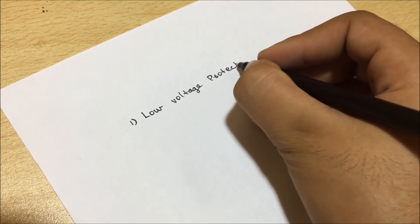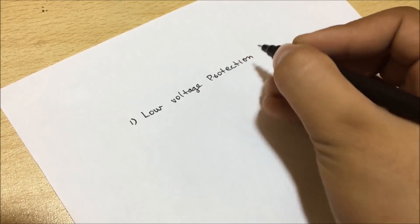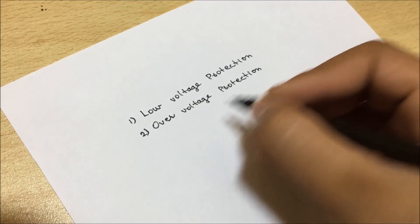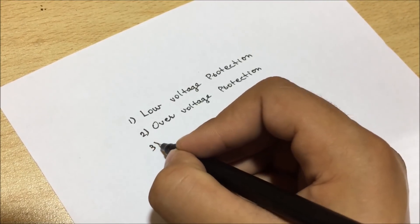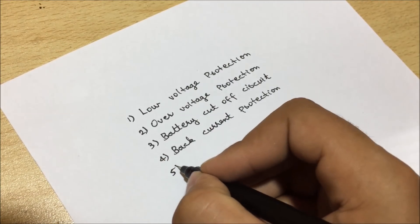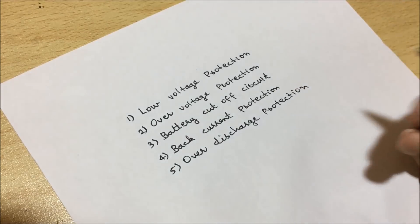A typical charge controller consists of 5 basic features. Number 1 is low voltage protection. Number 2 is over voltage protection. Number 3 is battery charging cut off circuit. Number 4 is backward current protection. And the last is over charge protection.